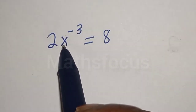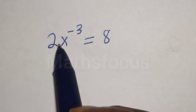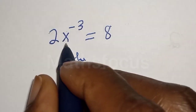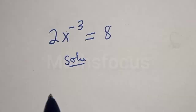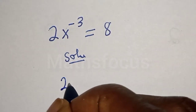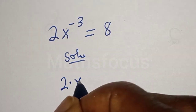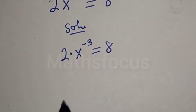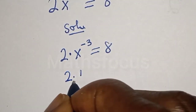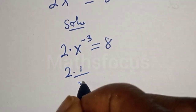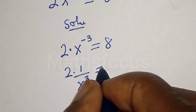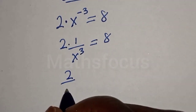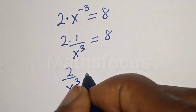Hello, we want to find the value of s from this exponential equation. This is 2x raised to the power minus 3, equal to 8. This can be written as 2 multiplied by s raised to the power minus 3 is equal to 8. The index is 2 multiplied by 1 over s raised to the power 3, which is equal to 8.